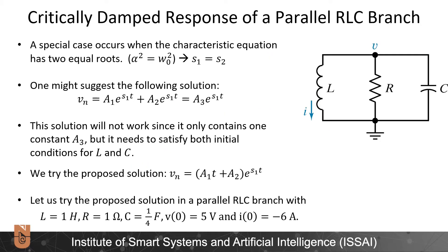A special case occurs when alpha squared is equal to omega zero squared and S1 becomes equal to S2. In this case, we might suggest the solution: natural response equals A1 times e to the S1t plus A2 times e to the S1t. However, I can collect the terms A1 and A2 and write this as A3 times e to the S1t. Even though we have two different initial conditions for this circuit, we have only one free parameter A3, and therefore this solution will not work.